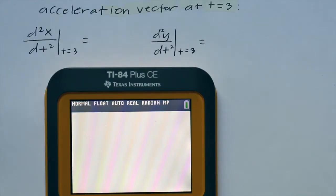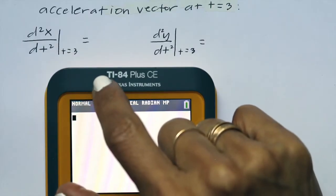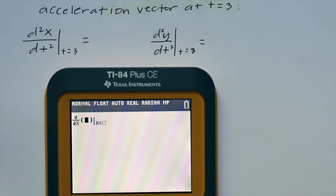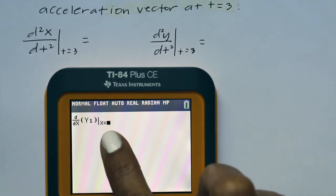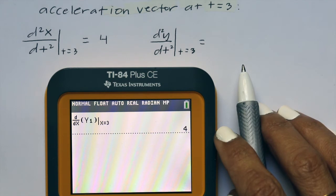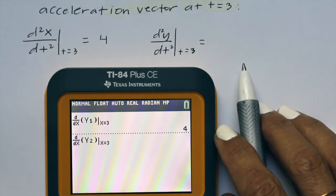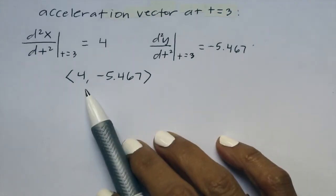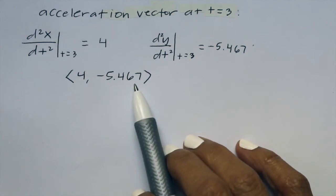To find the acceleration vector when t equals 3, we need the second derivative. y1 is our dx/dt. To take the derivative, we use math 8 and call up y1 — that's our dx/dt — plugging in 3 for t, and you get 4. We do the same thing with dy/dt: press math 8, call up y2, plug in 3, and you get negative 5.467. So our acceleration vector is ⟨4, −5.467⟩.